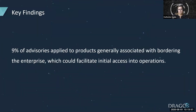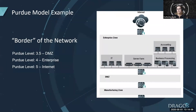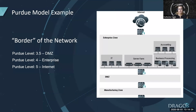9% of advisories applied to products generally associated with bordering the enterprise, which could facilitate initial access into operations. These devices were marked as either Purdue Model 3.5, 4, or 5. These could be things like Symantec Endpoint Protection, Rockwell Stratix 5950, or Remote Connect Servers. If you can identify choke points of these systems within your environment and evaluate risks defined as on the border, you can map out where your risks truly are. You can also validate that these are actually on the border to ensure your architecture is following best practices.